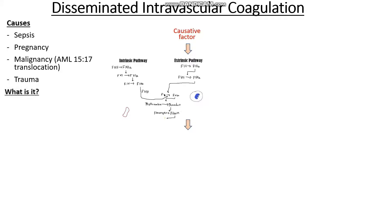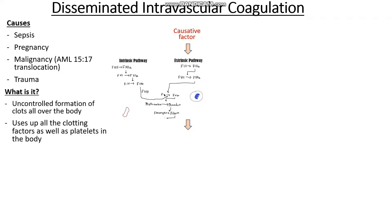So what actually is disseminated intravascular coagulation? It's the uncontrolled formation of clots all over our body. Because we are getting the formation of these clots, we are using up our clotting factors, but not only that — we are using up our platelets as well, as the fibrin sheath formed is very sticky and will grab onto nearby platelets. So we become deficient in not only our clotting factors but also our platelets, meaning both our primary and secondary haemostasis is impaired.